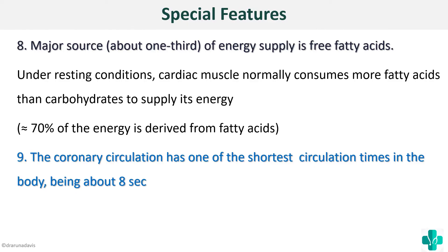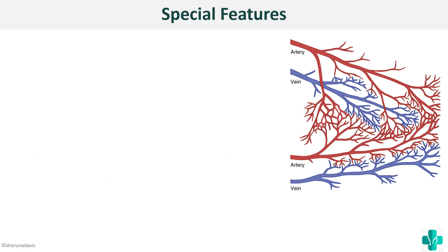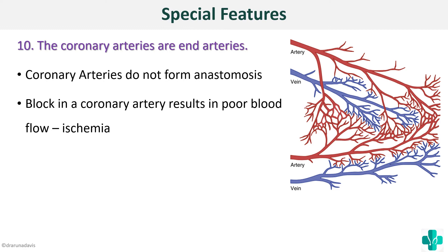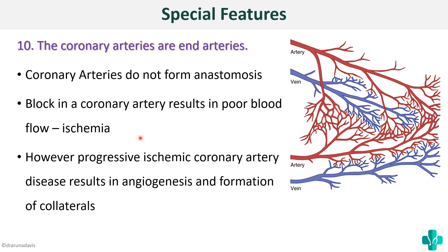Despite all these efficient features, we still have infarcts and ischemia. This is because coronary arteries are end arteries — meaning they do not have much anastomosis between them. So when there is even a small blockage, it will cause ischemia because the coronary arteries cannot compensate for the decreased blood flow during systole. However, if the ischemia is progressive and atherosclerosis develops slowly, the coronary arteries can stimulate angiogenesis and formation of collaterals through various growth factors.